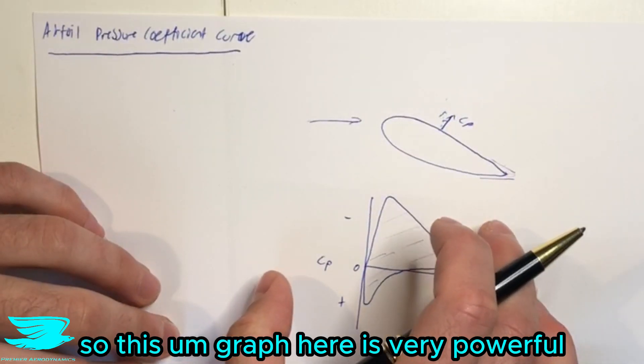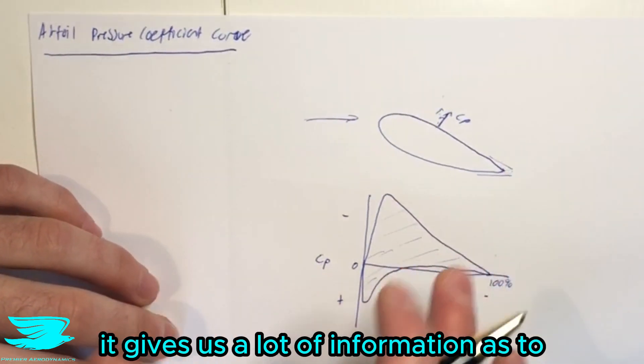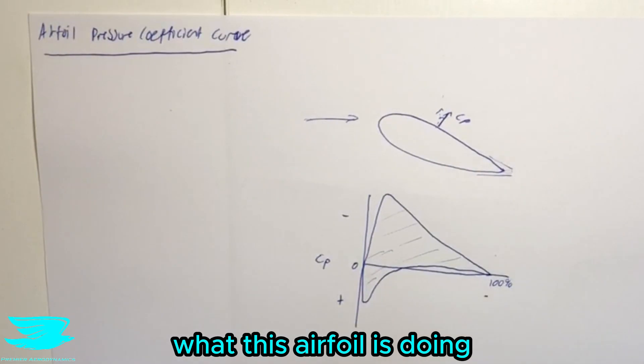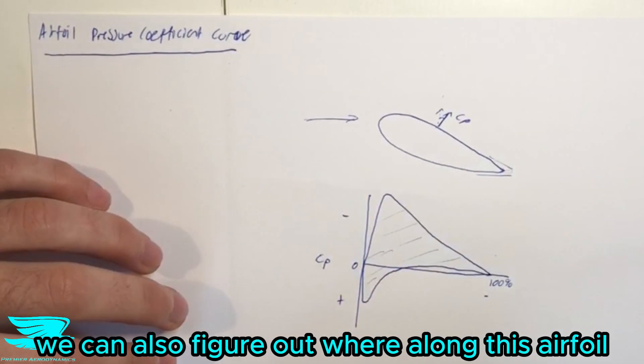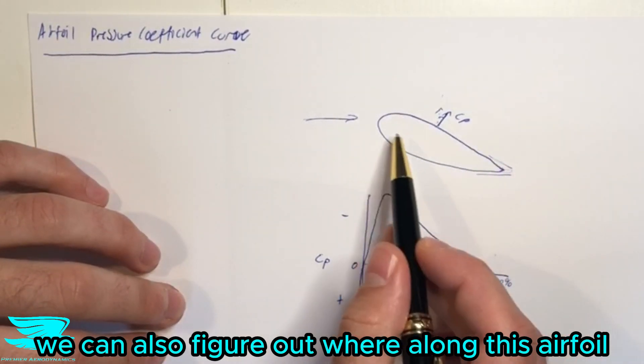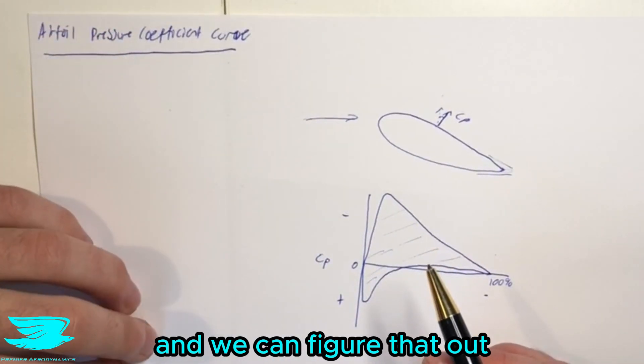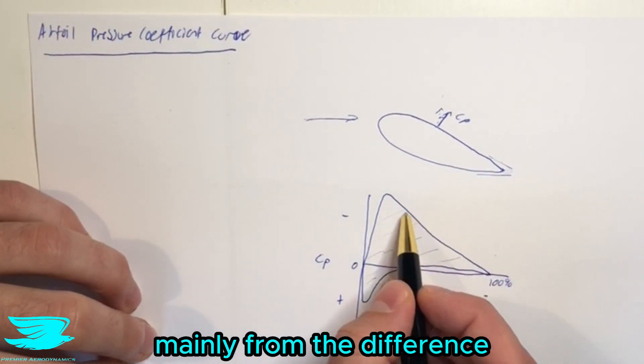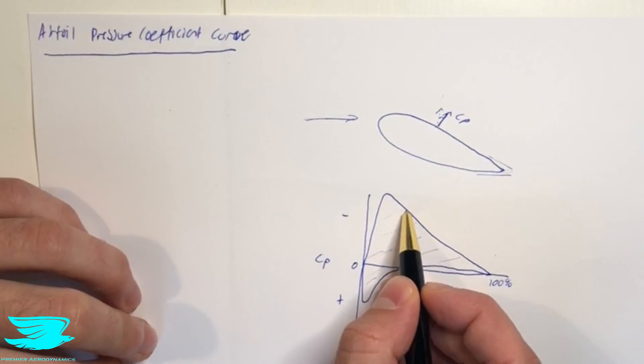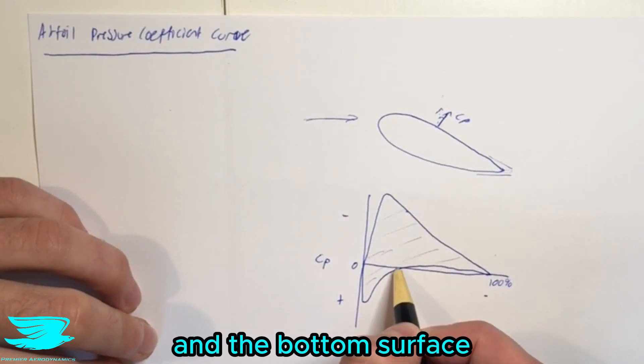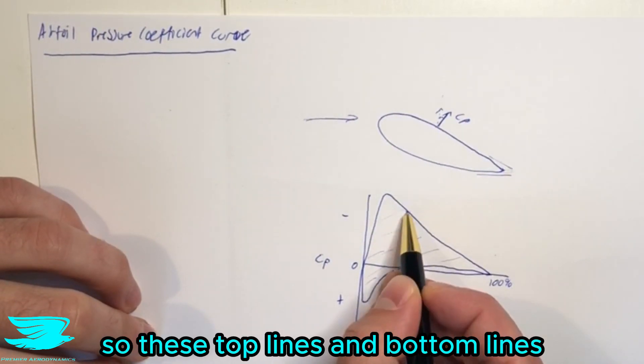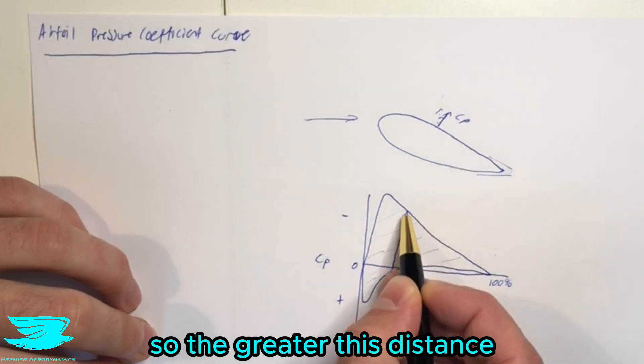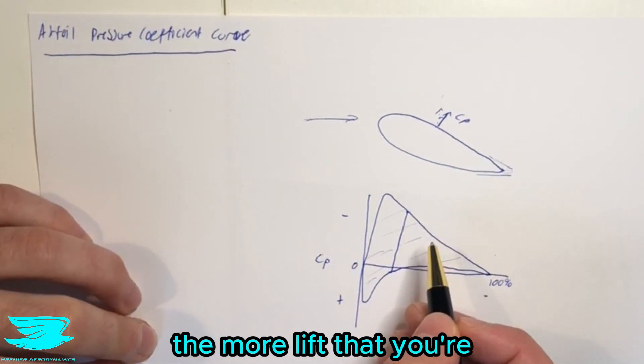So this graph here is very powerful. It gives us a lot of information as to what this airfoil is doing. From that, we can also figure out where along this airfoil the most amount of lift is being produced. And we can figure that out mainly from the distance between the top surface and the bottom surface, so these top lines and bottom lines. So the greater this distance is, generally speaking, the more lift that you're producing.